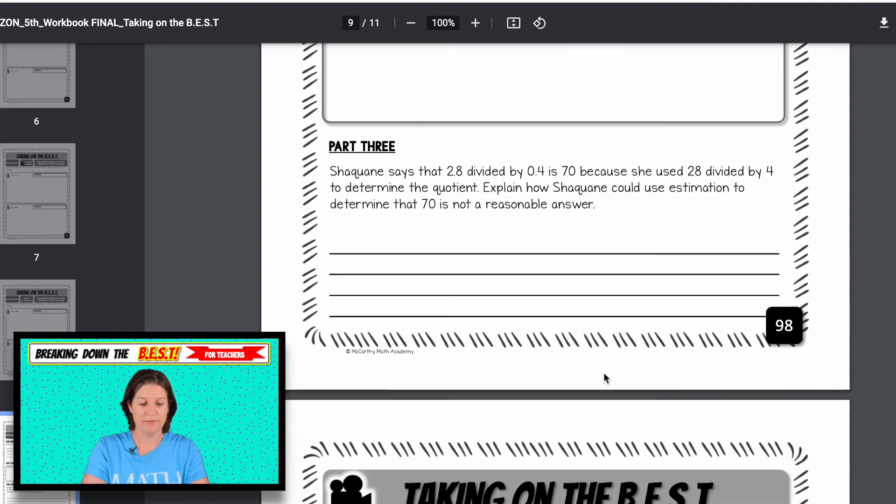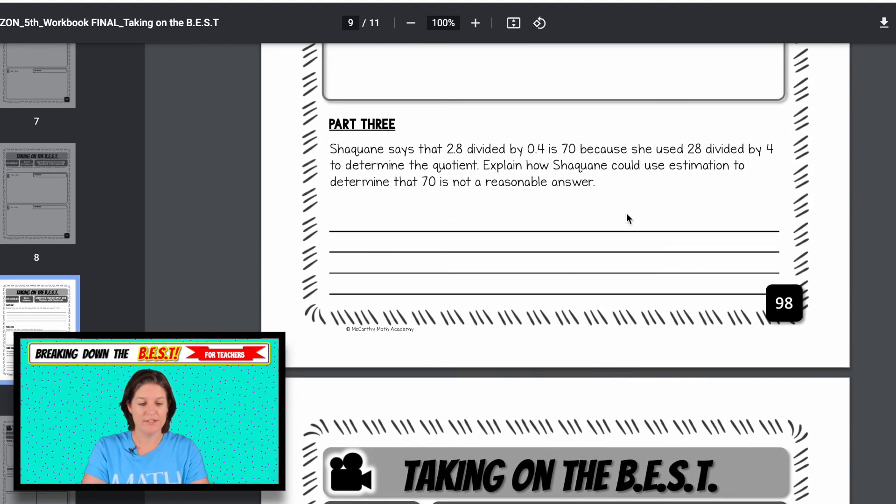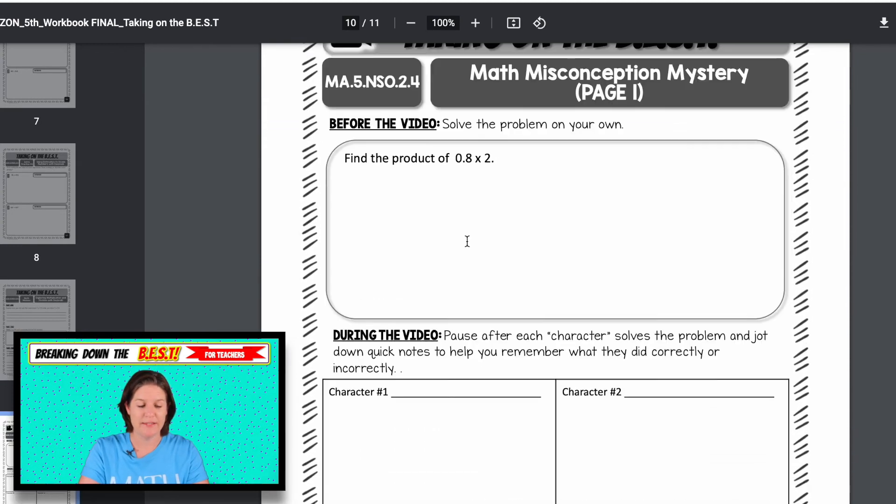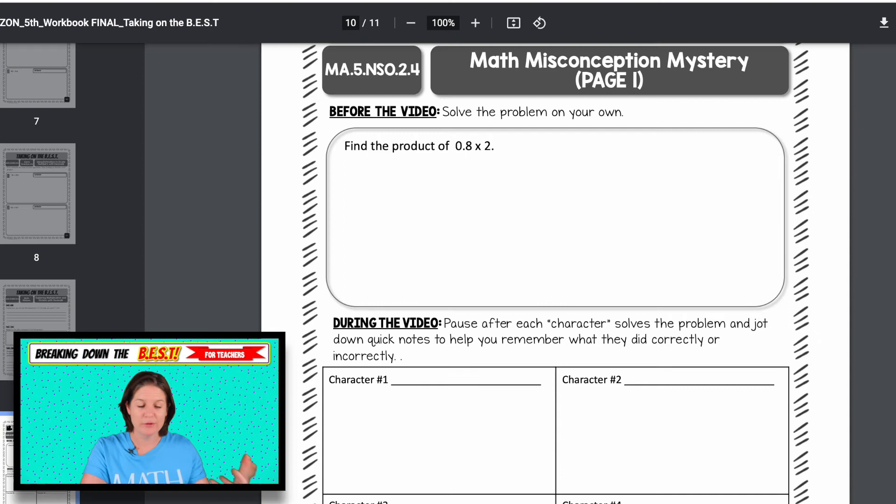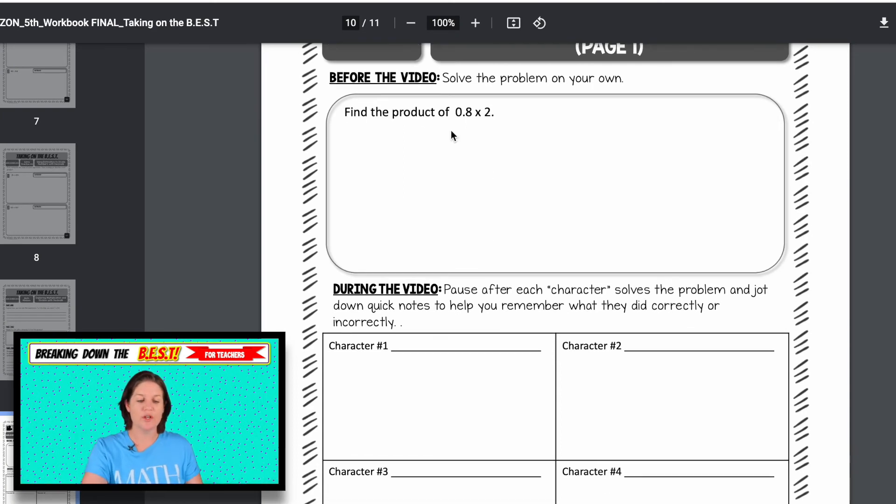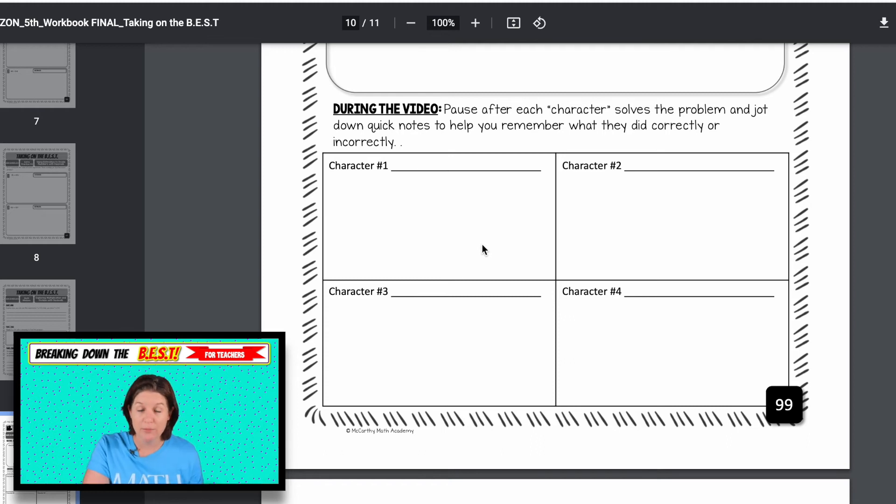This is your math misconception mystery problem. The video is right here. It walks you through the whole process. Students will solve this problem either independently or with a group, whatever you choose, and then they will watch four characters solve the same problem. The characters are just me dressed up in silly costumes, having some fun. Three of those characters will make a mistake that students tend to make when they're solving these problems. And only one character is correct.